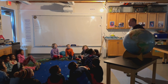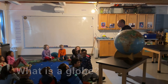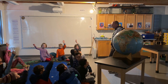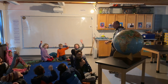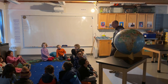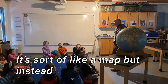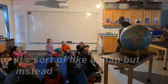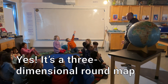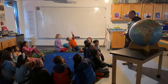It's a globe. A globe — with a raised hand — what is a globe? It's like a thing that shows you different places, it's sort of like a map, but instead it's a map in a circle. Yeah, it's a round map. It's a three-dimensional round map of the earth.